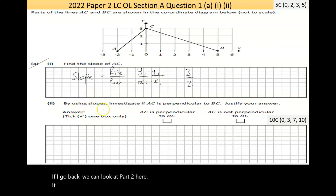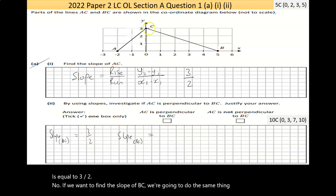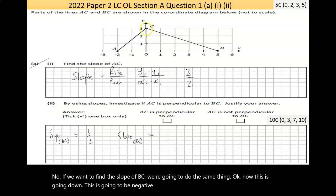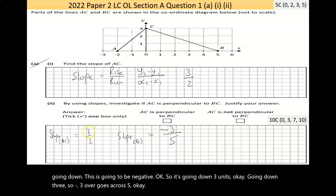Part two says, by using slopes, investigate if AC is perpendicular to BC. We know that the slope of AC is equal to 3 over 2. Now, if we want to find the slope of BC, we're going to do the same thing. This is going down, so it's going to be negative. So it's going down three units, negative three over, goes across five.